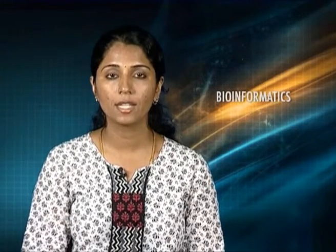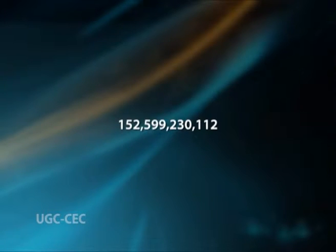For instance, the GenBank repository of nucleic acid sequences contained nearly 152,599,230,112 entries and around 165,740,164 protein sequence entries were reported in July 2013. In an average calculation, the number of these database entries is doubling every 15 months.